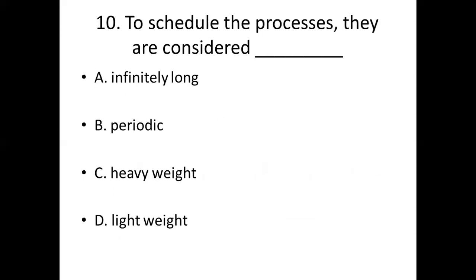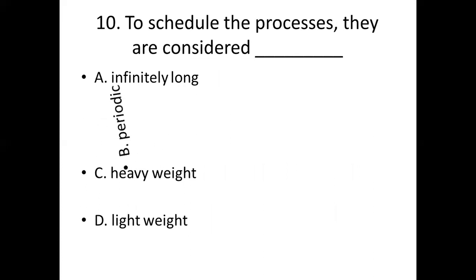Tenth bit: To schedule the processes, they are considered dash. Option A: Infinitely long. Option B: Periodic. Option C: Heavyweight. Option D: Lightweight. Answer: Option B — Periodic.